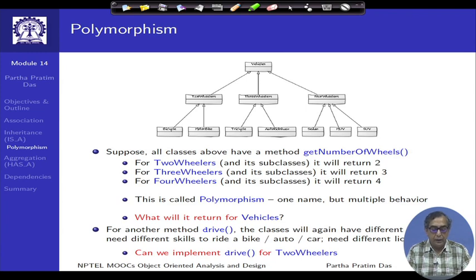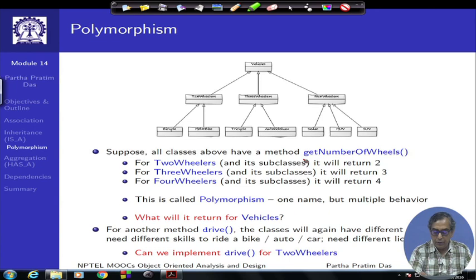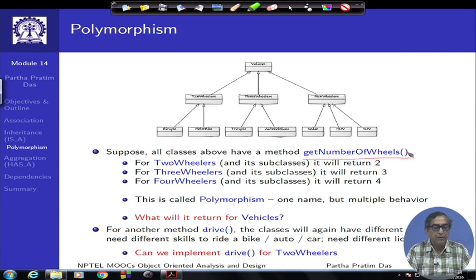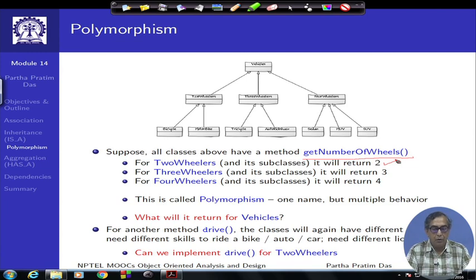Let me introduce polymorphism with a small example using the inheritance hierarchy of vehicles introduced earlier. We would like to know, for any object of any class, how many wheels a vehicle has. So we have a method called get number of wheels. For the two-wheeler class and its subclasses, this method should return 2; for three-wheeler it should return 3; for four-wheeler it should return 4 and also for their respective subclasses.